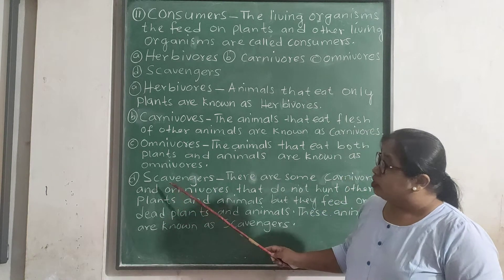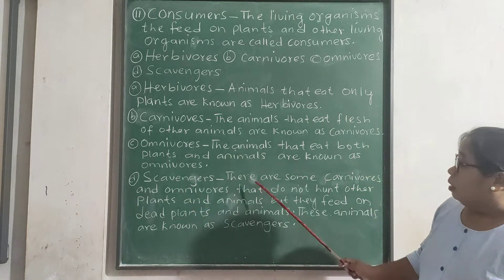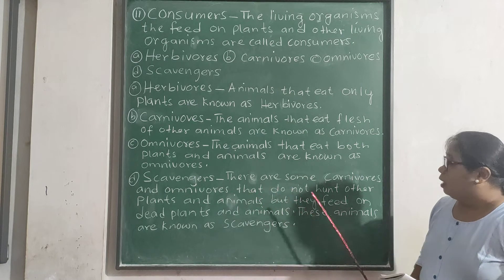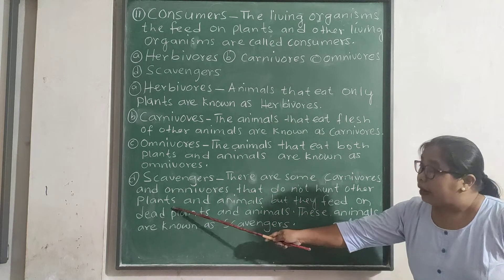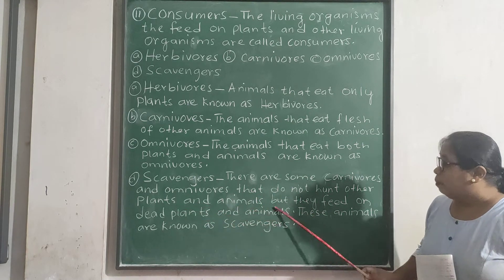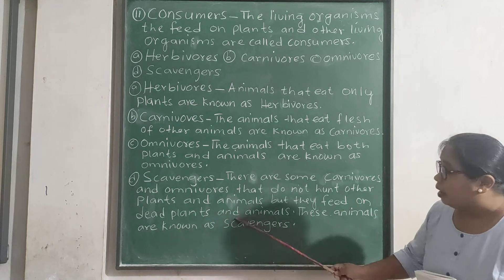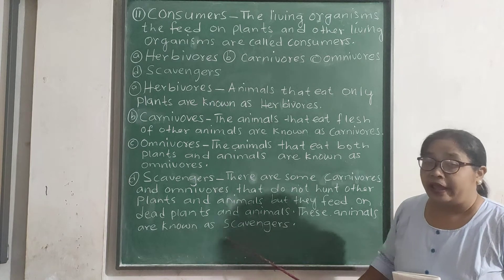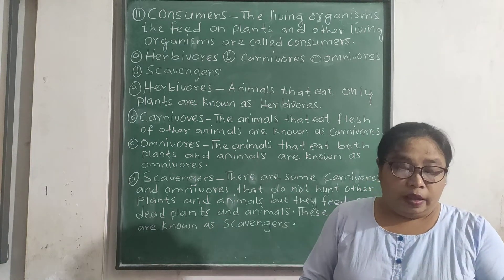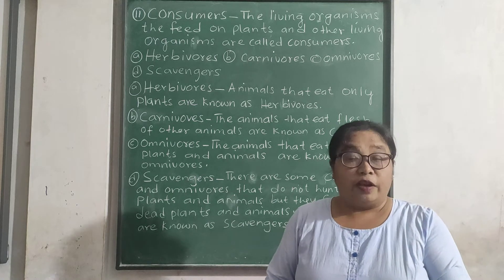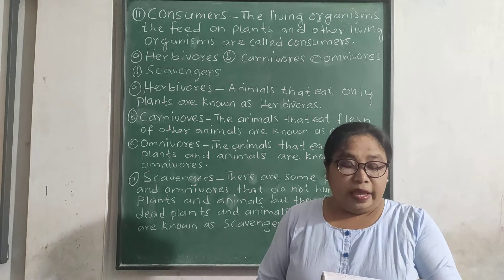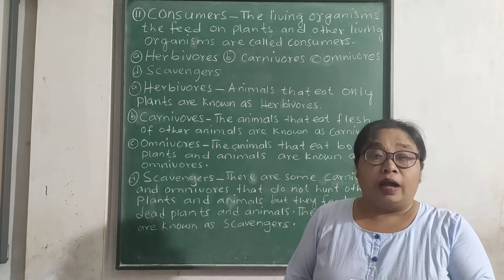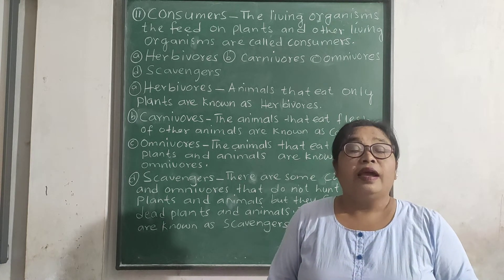Let us discuss scavengers. Scavengers are a type of carnivores and omnivores. They do not hunt other plants and animals, but they feed on dead plants and animals. They help in keeping the environment clean as they eat the dead bodies of animals. Examples of scavengers are vultures and hyenas.